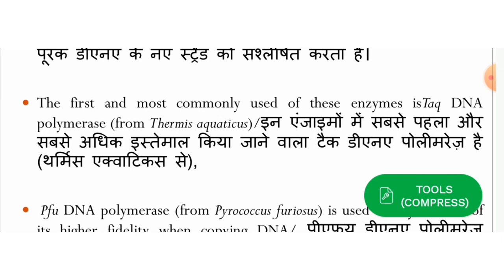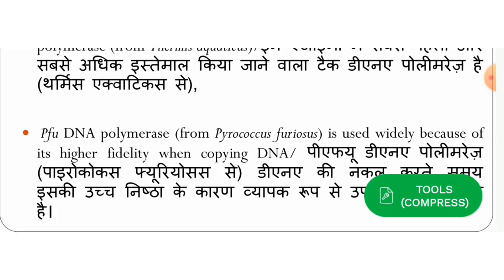An important requirement is that the enzyme used in PCR must come from thermophilic bacteria, because denaturation of DNA occurs at 94°C. An ordinary enzyme would be denatured at this temperature. So this enzyme is isolated from thermophilic — heat-loving — bacteria.